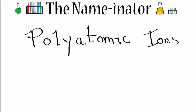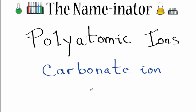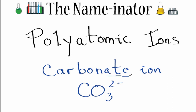If we're given something like the carbonate ion, we can look it up and see that the carbonate ion is CO3 2 minus. Often polyatomic ions will end in -ate, like the carbonate ion, or -ite, but sometimes they end in -ide, like the hydroxide ion.